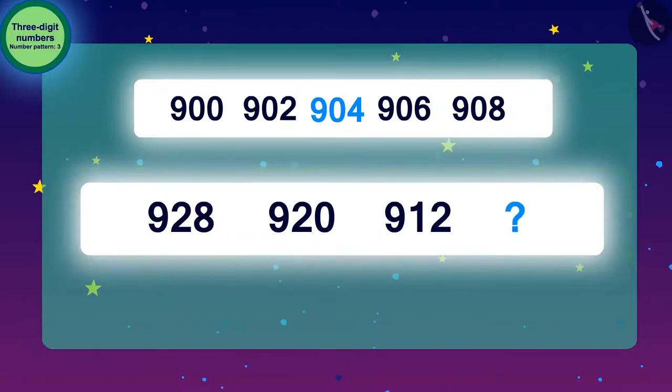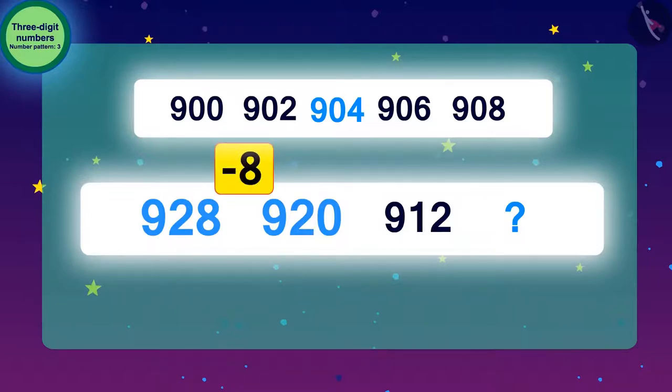Now, we will find the number pattern of the second blank. To get from 928 to 920, we have to go 8 steps back, means we have to subtract 8.